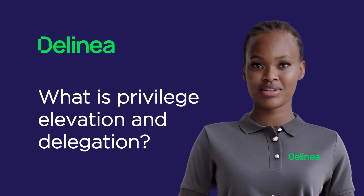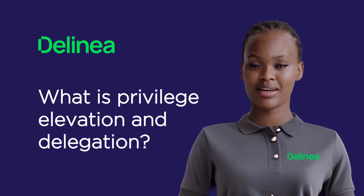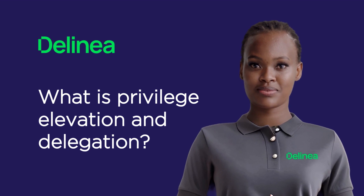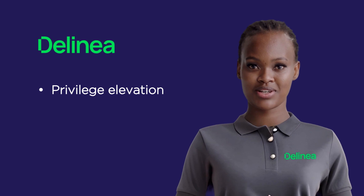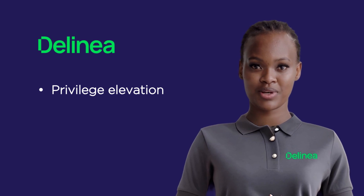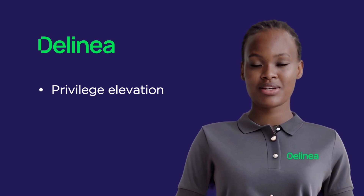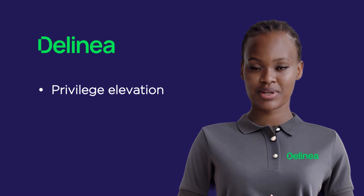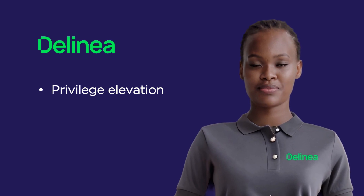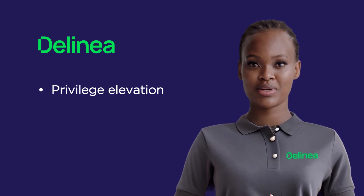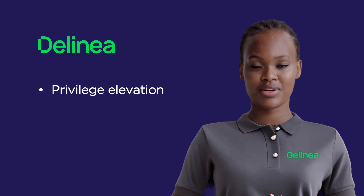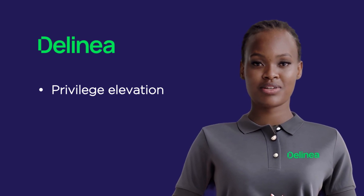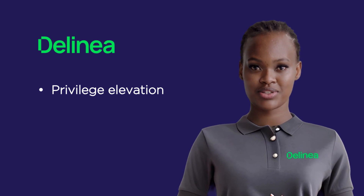In order to understand PEDM, first understand privilege elevation, escalation, and delegation. Privilege elevation, also known as vertical elevation, is the process by which a user or application increases their access levels beyond what was initially granted. This can be done through exploiting bugs, design flaws, or configuration oversights. These users are known as overprivileged users.